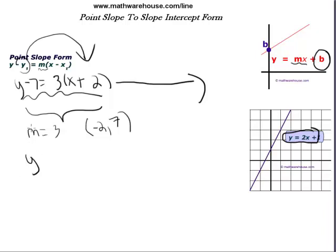So let's do that. We're going to move y1 over. Let me rewrite this, y minus 7 equals 3 times x plus 2. Step number one will be to move that y1 over to the other side by adding its opposite to both sides.